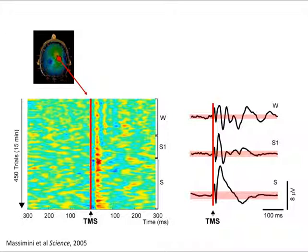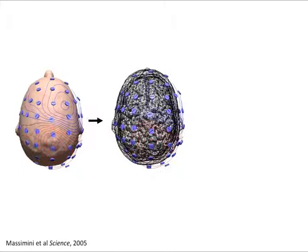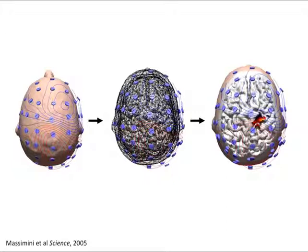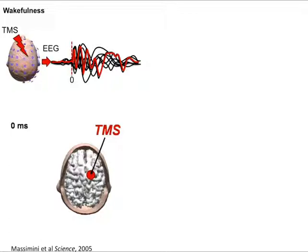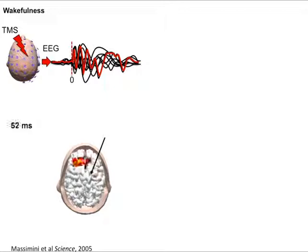This is from the point of view of a single electrode, but we are interested in the spatiotemporal dynamics. To explore this, we perform source modeling, taking into account all channels and the individual MRI to estimate the currents in the cortex. In wakefulness, the initial activation under the stimulator propagates in a large network in a specific way — left frontal activation, posterior parietal — and this pattern is reproducible and specific for this kind of stimulation.